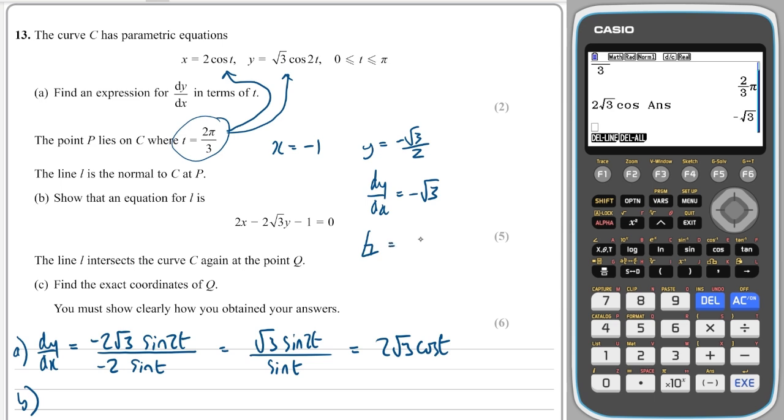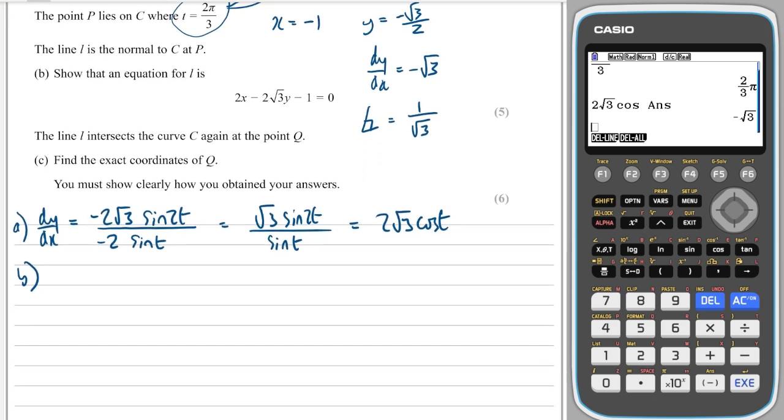Right, I've got all my tools now. The equation of a line is y minus y₁, so minus minus makes plus, and then that's equal to m which is the gradient of the normal, over x minus the x value is minus 1, so plus 1.